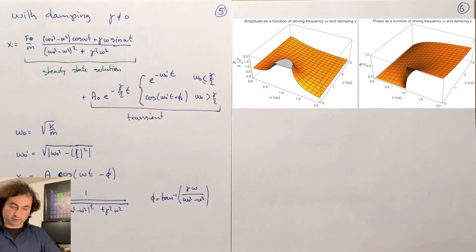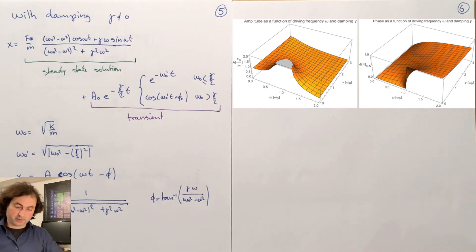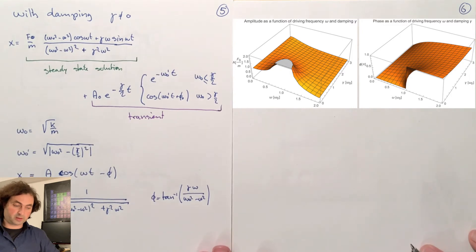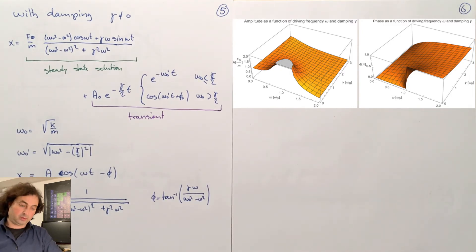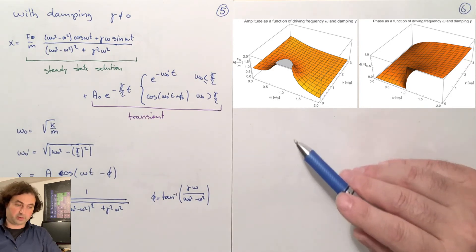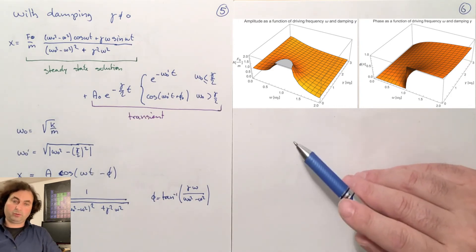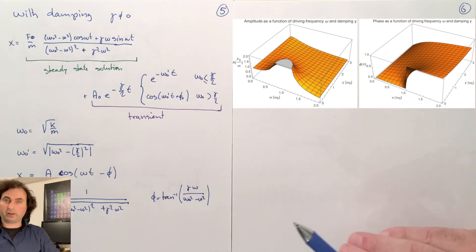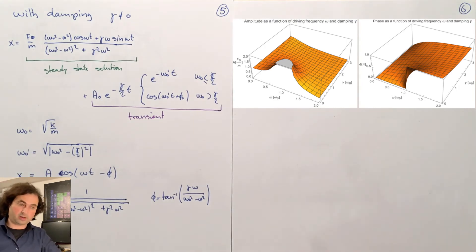On the right you see the phase as a function of driving frequency, with the resonance frequency omega zero set to one in units of the resonance frequency. On the left you see the amplitude — it diverges when gamma is zero at the resonance frequency, and for finite values of the damping this divergence broadens and you get the classical Lorentzian line shape.